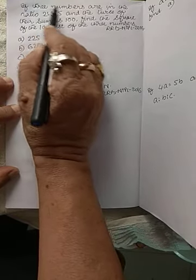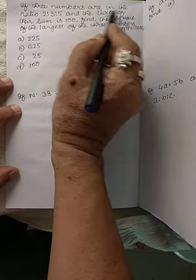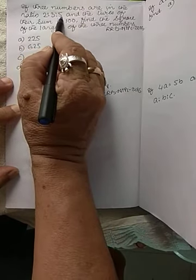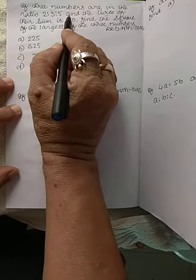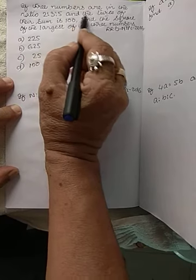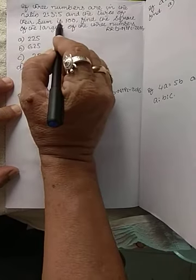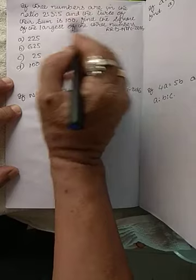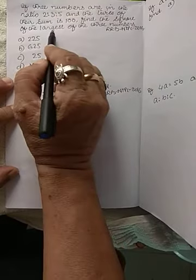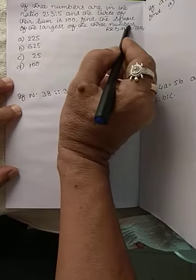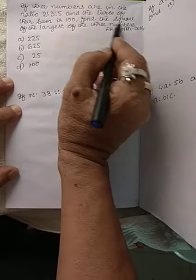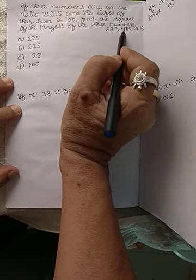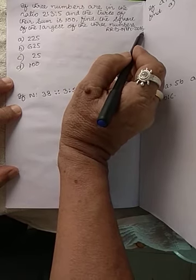If three numbers are in the ratio 2:3:5 and the twice of their sum is 100, find the square of the largest of the three numbers. This question is given in R.R.B. N.T.P.C. 2016.